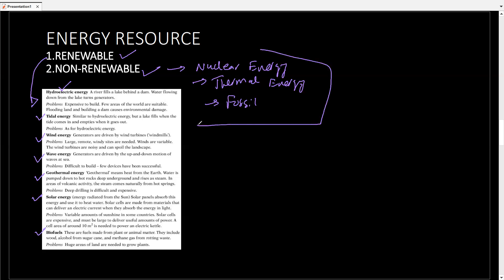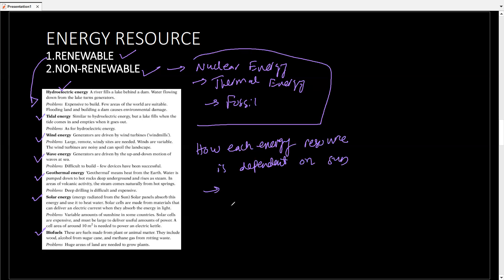An important topic is how each energy resource depends on the sun. There are only a few energy resources independent of the sun. These three are: geothermal energy, which does not draw its energy from the sun; tidal energy, which does not draw its energy from the sun; and nuclear energy. Tidal energy depends on the gravitational pull of the moon, geothermal energy comes from the center of the earth, and nuclear energy comes from the nucleus of an atom.